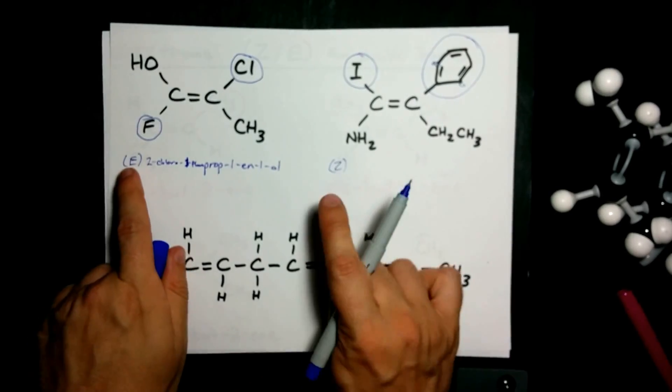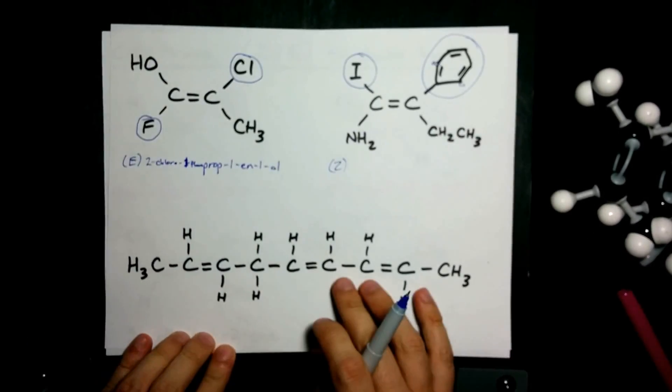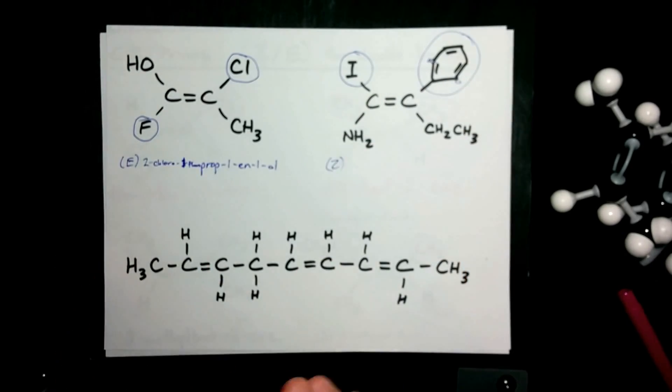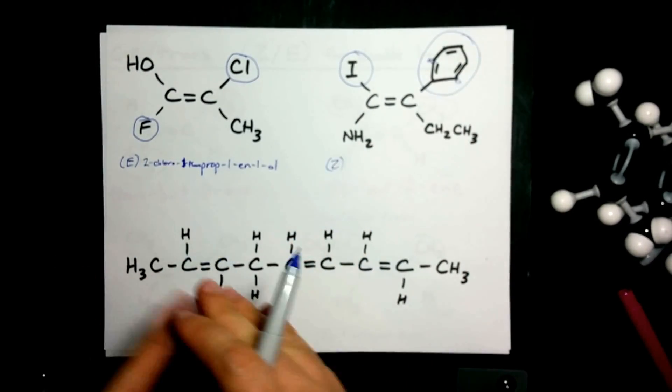And finally, you might wonder why we had to create E and Z if cis and trans is working fine for us. Well, cis and trans gets really bulky and I don't even know how to do it if you have more than one double bond.